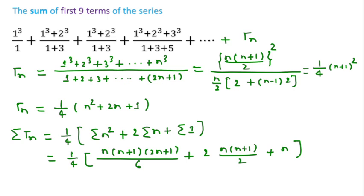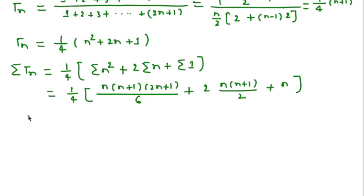9, then we get sum of first nine terms will be 1/4. In place of n if we put 9, then this becomes 9×10×19/6.